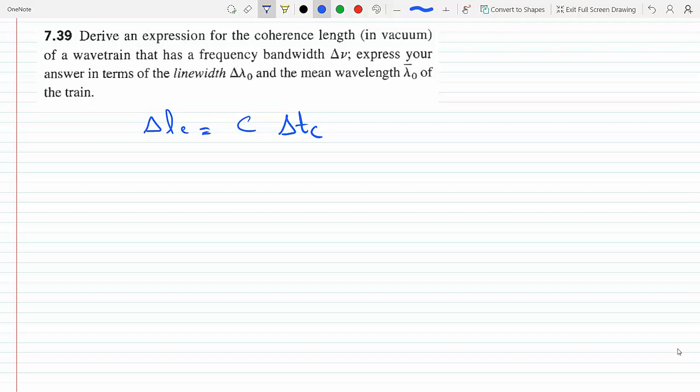And we know that ΔF is equal to 1 over ΔT, which makes ΔT coherent time equal to 1 over change in F.